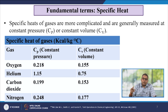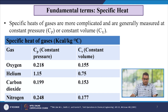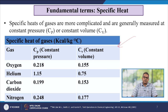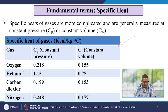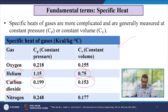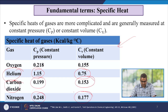The specific heat of gases is more complicated and is generally measured at constant pressure or constant volume. The table shows specific heat in kcal/kg·°C: oxygen Cp = 0.218, Cv = 0.155; helium Cp = 1.15, Cv = 0.75; carbon dioxide Cp = 0.199, Cv = 0.153; nitrogen Cp = 0.248, Cv = 0.177.